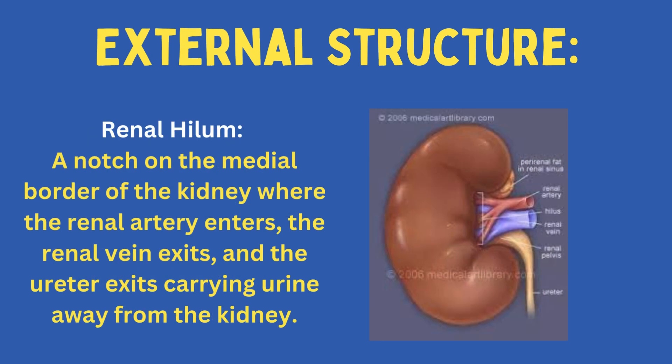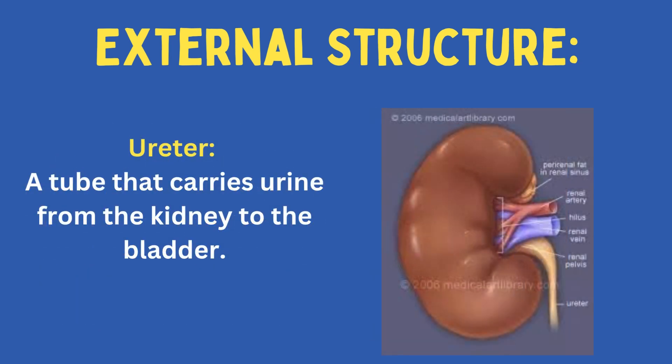Renal Hilum: a notch on the medial border of the kidney where the renal artery enters, the renal vein exits, and the ureter exits carrying urine away from the kidney. Ureter: a tube that carries urine from the kidney to the bladder.